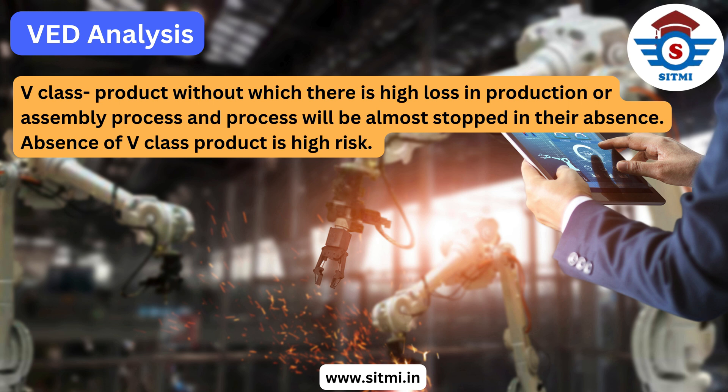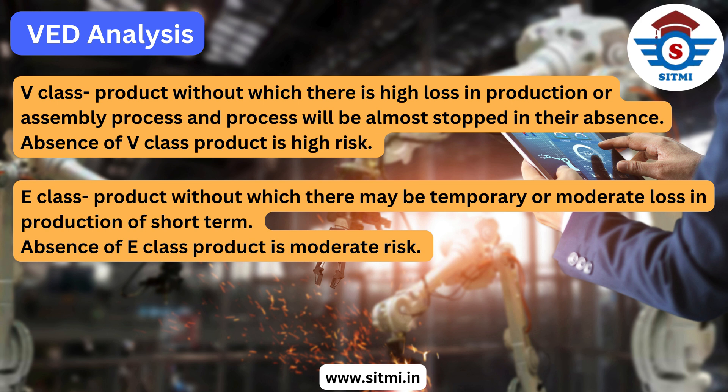The second class is E class products. These are products without which there may be a temporary or moderate loss in terms of production or assembly line. That's why these products are referred to as essential, and the absence of an E class product is a moderate risk in the production or assembly line.